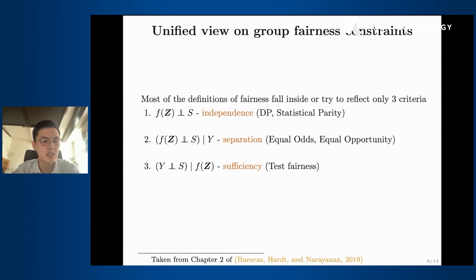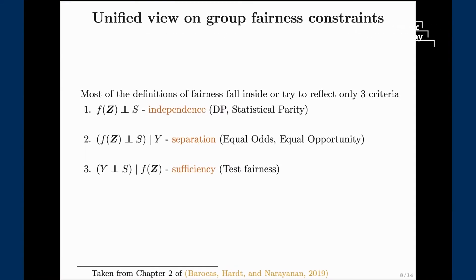To address that, people invented separation where we again ask for the same independence of our prediction from sensitive attribute but right now conditioned on the label. So if I know the label then sensitive attribute does not matter to me. In that case you probably should trust your label, so your label should be some reflection of reality. Finally there's sufficiency. It pretty much resembles the standard sufficient statistics from statistics 101. We want Y being independent from S, the label being independent from the sensitive attribute given our prediction. It's a direct parallel with sufficient statistics.